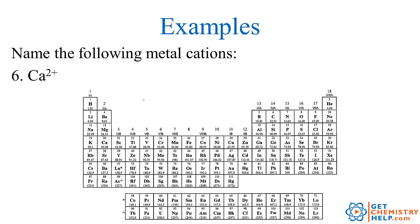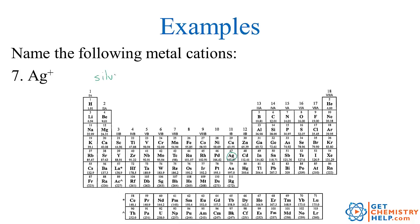Now let's go through metal cation naming. Some will be fixed charge, some variable. Calcium 2 plus — calcium is in group 2, so it doesn't need a Roman numeral. We just call it calcium ion. How about silver? Silver is in the magic triangle, so it can only be silver positive and can't vary. We just call it silver ion.